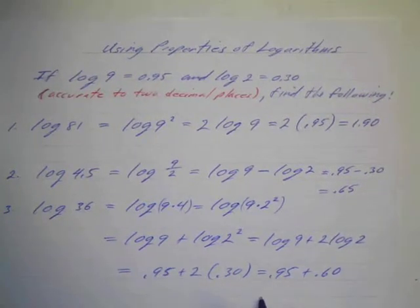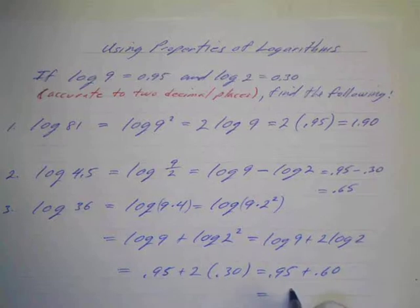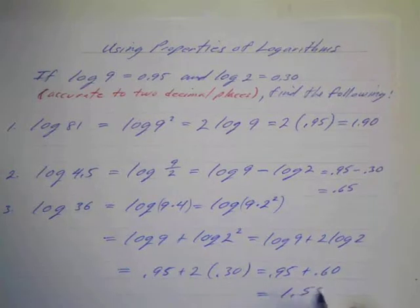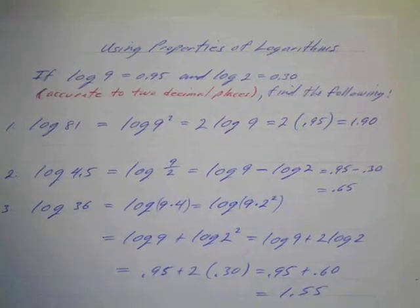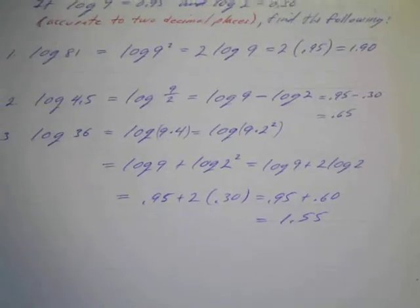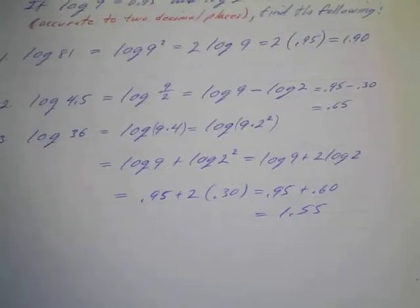We have 0.95 and 2 times 0.3 is 0.6 so plus 0.60 and if we add those we get 1.55. All right so that works out kind of cool.